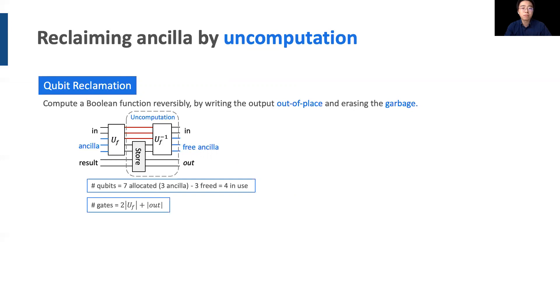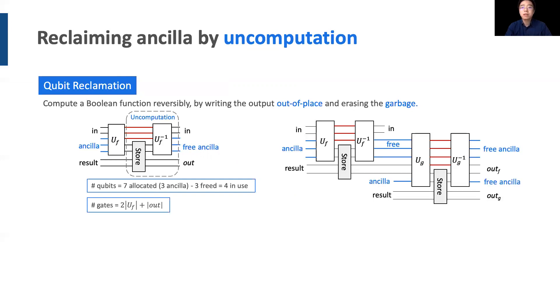If qubits are reclaimed timely, then we can prevent garbage from accumulating too quickly. In fact, with moderate increase in gate costs, qubit reclamation can be done strategically to reduce the overall qubit usage and communication costs of a quantum circuit. This is precisely the aim of the Square algorithm.